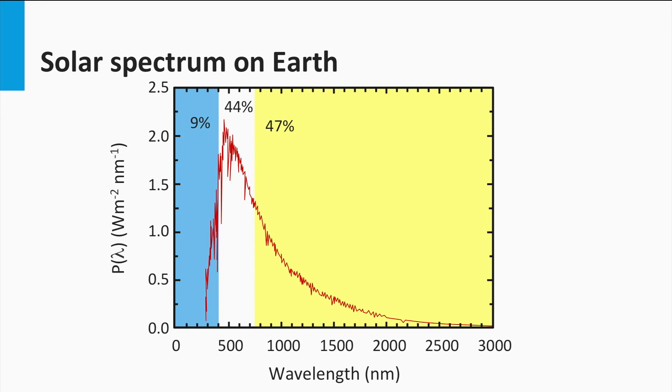If we look at the solar spectrum, 9% of its energy is in the UV range at wavelengths smaller than 400 nm. 44% of its energy is in the visible range, whereas 47% of its energy is in the infrared.